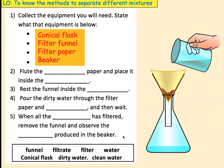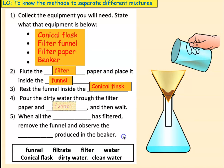So, let's look at the answers. The pieces of equipment that we're going to use are conical flask, filter funnel, which is in the conical flask, the filter paper, which is in the filter funnel, and a beaker to pour the dirty water in. We're going to fold the filter paper and place it inside the filter funnel, rest the funnel inside the conical flask. Pour the dirty water through the filter, and the funnel, and then wait. When all of the dirty water has filtered, remove the funnel and observe the clean water produced in the beaker. Hopefully, we got all of that right.